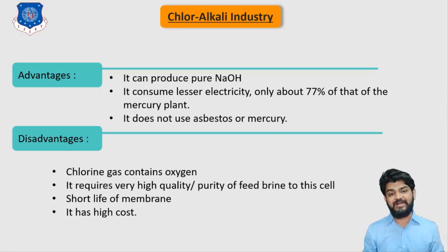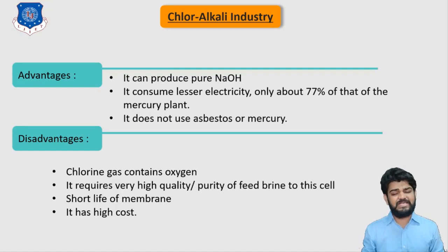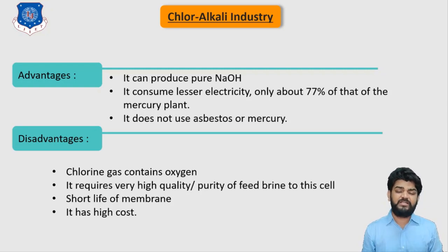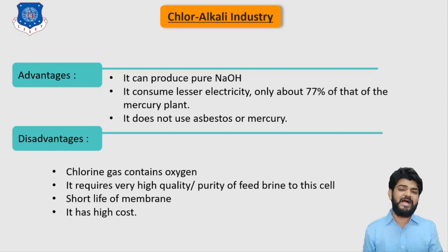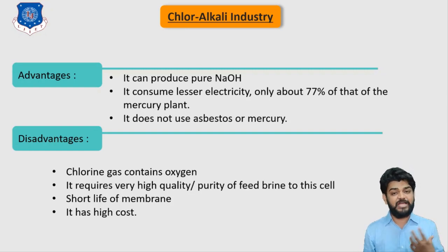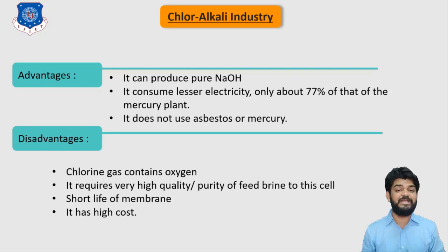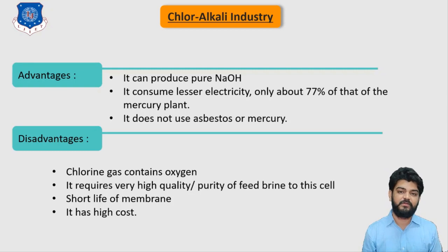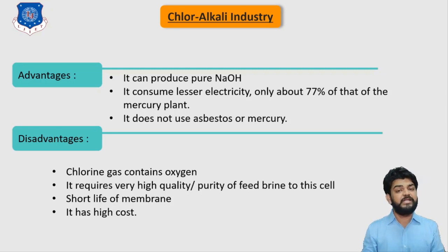We can compare all three cells using their advantages and disadvantages. An important exam question from this chapter is: compare the mercury cell with the membrane cell and diaphragm cell. Alternatively, you may be asked to explain any one cell — draw the schematic diagram, explain the process, write the chemical reactions from the previous video, and discuss the advantages and disadvantages.